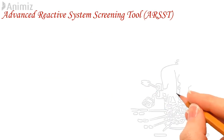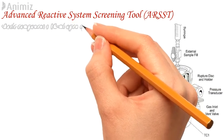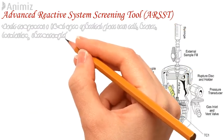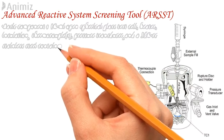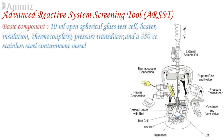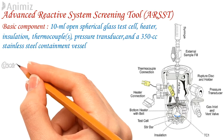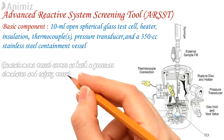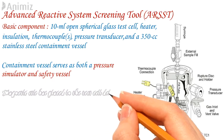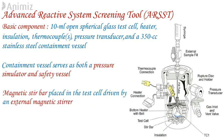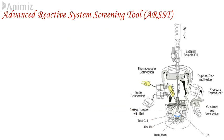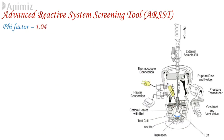The basic components of ARSST include a 10 ml open spherical glass test cell, heater, insulator, thermocouple, pressure transducer, and a 350 cc stainless steel containment vessel that serves as both a pressure simulator and safety vessel. A small magnetic stirrer bar is placed in the test cell and driven by an external magnetic stirrer. The external bottom heater is belted directly to the test cell. The apparatus has a low effective heat capacity relative to that of the sample, expressed as a phi factor of about 1.04.